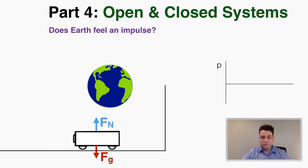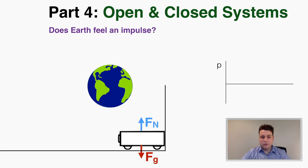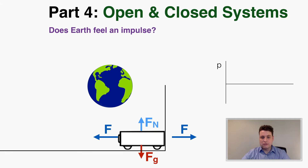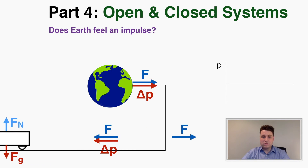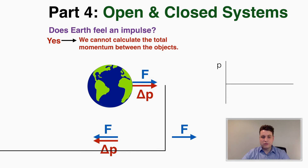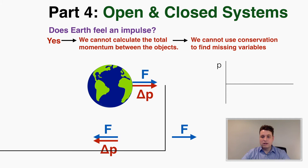Here's another example: a cart hitting a wall. The wall applies a force on the cart, and as a result the cart applies a force on the wall. The wall is connected to the building, which is connected to the ground, which is connected to the earth. So the earth does experience a force from that, and therefore also experiences an impulse. That makes the total amount of momentum in the problem so large that we can't possibly do any math with it — so we can't use conservation to find missing variables.